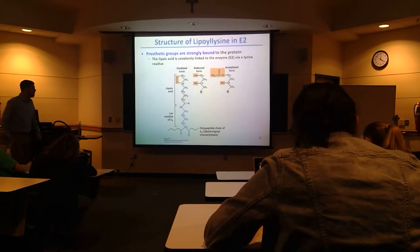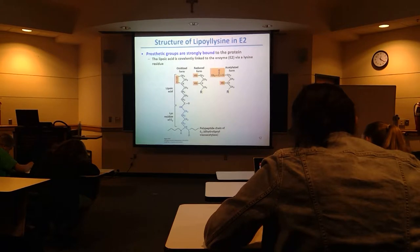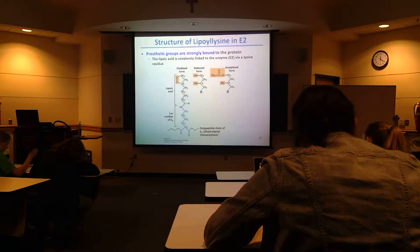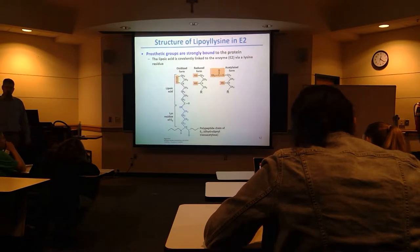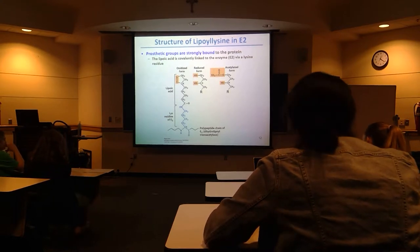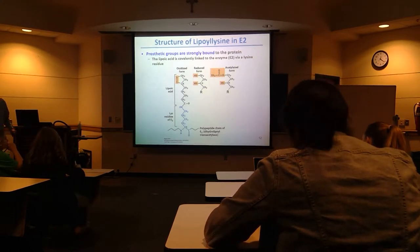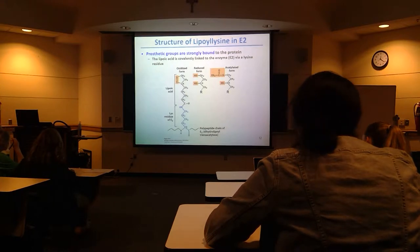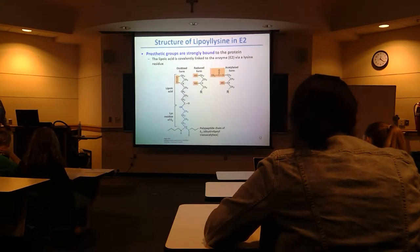I just wanted to mention what happens next in E2. The leftover — basically what's left of pyruvate that's linked to TPP — is going to be swapped over, moved over to E2, a different enzyme. And the prosthetic group that's in E2, that's going to help with the next steps, is called dihydrolipoyllysine.